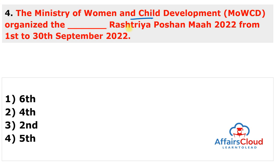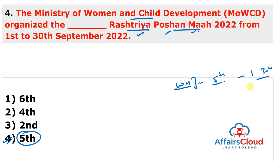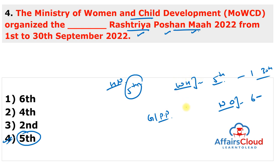The Ministry of Women, Child and Development organized the 5th Rashtriya Poshan Maah 2022 from 1st to 30th September 2022. The September month is celebrated as the National Poshan Maah to improve nutritional outcomes for children under 6 years of age, pregnant women, and lactating mothers. As part of the 5th edition, the Ministry plans to involve Gram Panchayats. Poshan is a Government of India flagship programme for holistic nutrition.